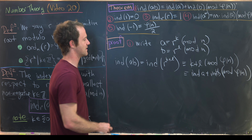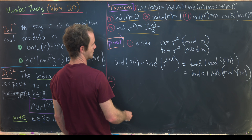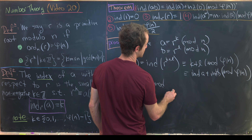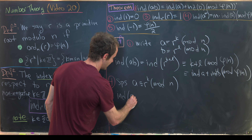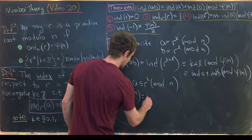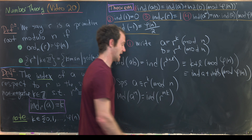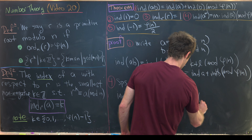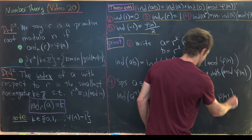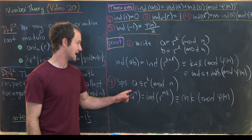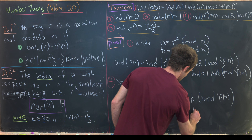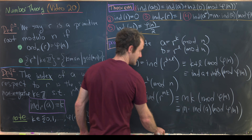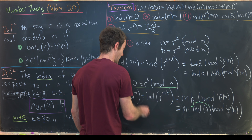For property 4, suppose a ≡ r^k mod n. Then ind_r(a^m) = ind_r(r^(mk)) ≡ mk mod φ(n) by definition of the index. Since k = ind_r(a), this gives m·ind_r(a) mod φ(n), which is exactly what we wanted.